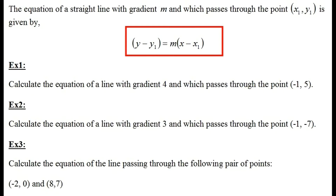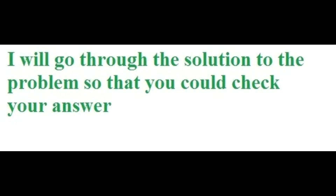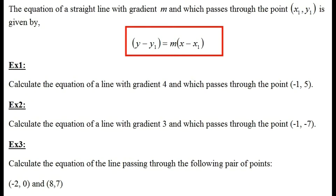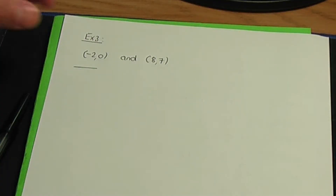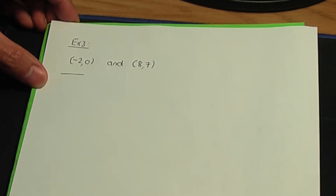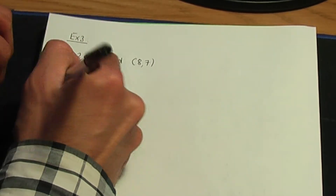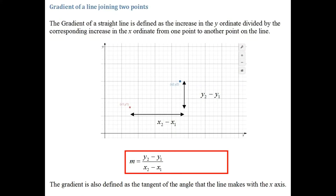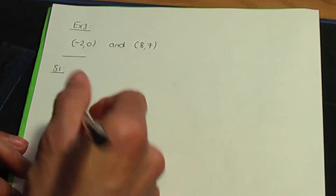Example number 3: calculate the equation of a line passing through the following pair of points. The first point has coordinates (−2, 0) and the second point has coordinates (8, 7). Since I have two points, I need to work out the gradient first. So in step 1, let's calculate m using the gradient formula from a previous video.